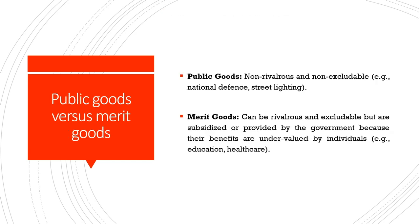How do we distinguish between public goods and merit goods? Public goods are non-rivalrous and non-excludable. Merit goods can be rivalrous and excludable, but they are subsidized or provided by the government because their benefits are undervalued by individuals. For example, governments invest heavily in primary, secondary, vocational, and skill-based education — although these can be excludable, they are subsidized because of their huge positive externalities for society in terms of better employment opportunities and economic growth.